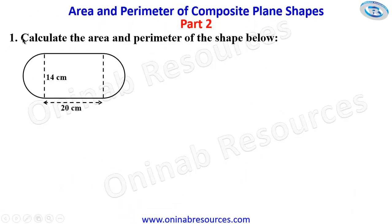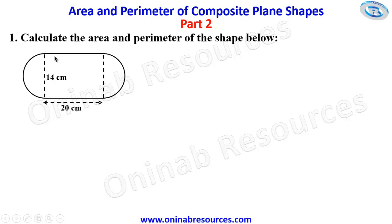Problem one: calculate the area and perimeter of the shape below. We need to analyze the shape. The shape is a composite shape comprising of a rectangle and two semicircles. The semicircles have the same diameter of 14 centimeters, and the diameter of the semicircle is the breadth of the rectangle, while the length of the rectangle is 20 centimeters.